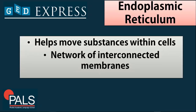Next we have the endoplasmic reticulum. It helps move substances within cells and is a network of interconnected membranes. Under the endoplasmic reticulum, we have the rough endoplasmic reticulum and the smooth endoplasmic reticulum. The rough endoplasmic reticulum has ribosomes attached to it, but the smooth endoplasmic reticulum has no ribosomes on it.